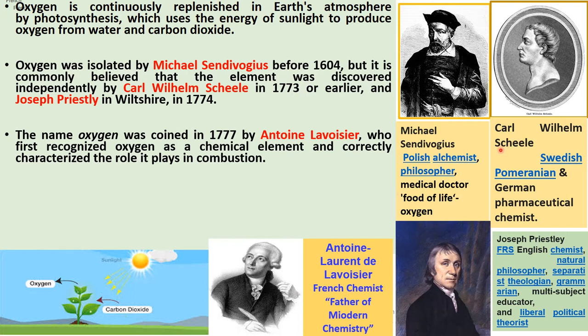Carl Wilhelm Scheele was a Swedish-Pomeranian and German pharmaceutical chemist. Many scientists call him 'Hardluck Scheele' because he discovered oxygen but Priestley published his findings first. Scheele discovered oxygen in 1772, two years before Joseph Priestley. Joseph Priestley was an F.R.S. — that is, Fellow of the Royal Society — an award granted by the Royal Society of London to individuals who have made a substantial contribution to the improvement of natural knowledge.